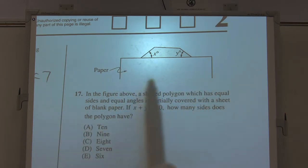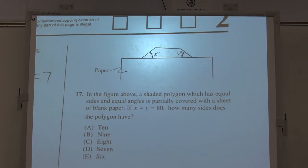And we know that x plus y equals 80. So these two angles equals 80. How many sides does the polygon have? Well, there's probably all kinds of ways to do this.